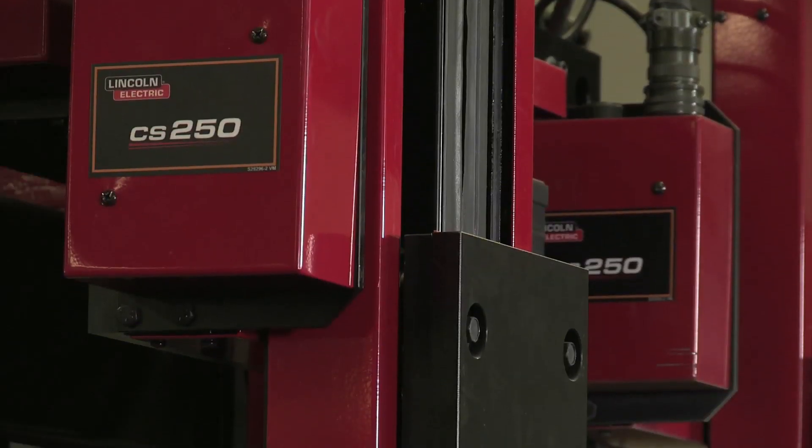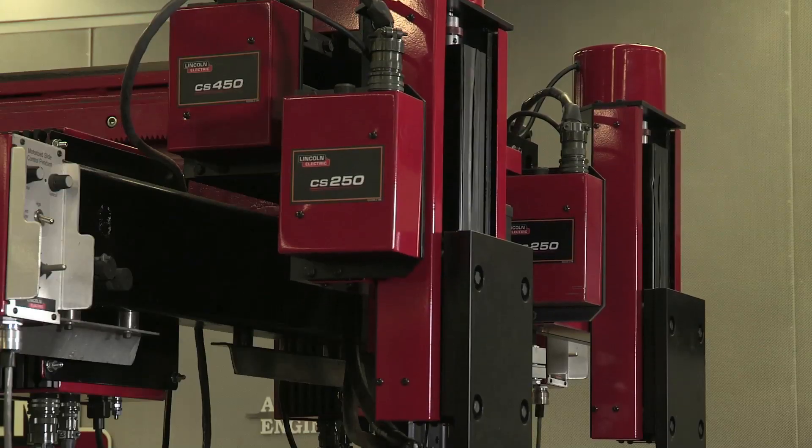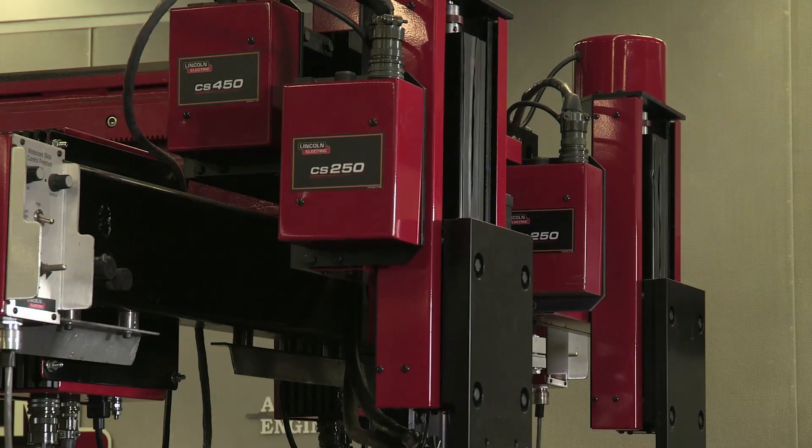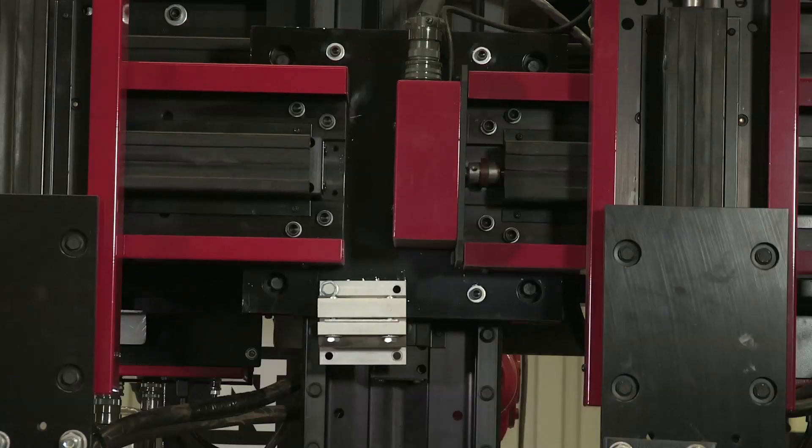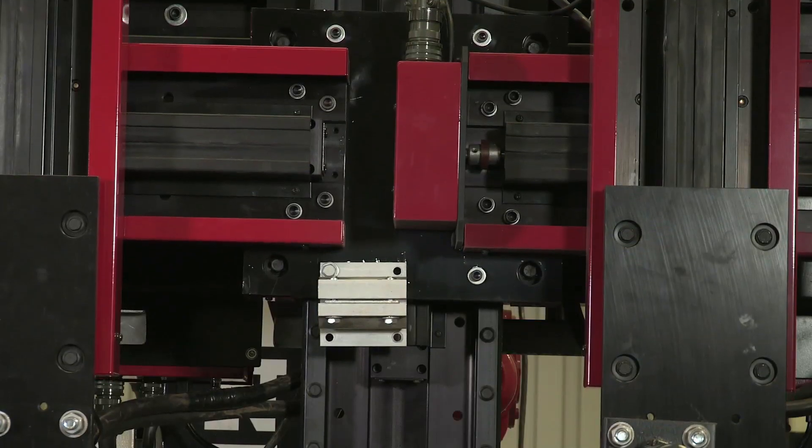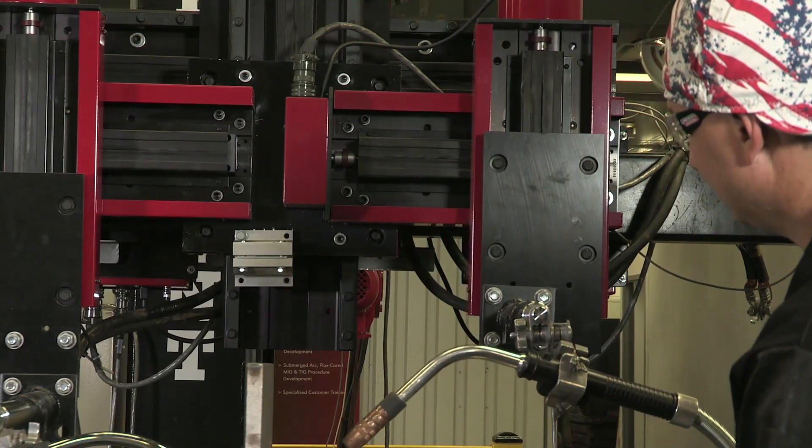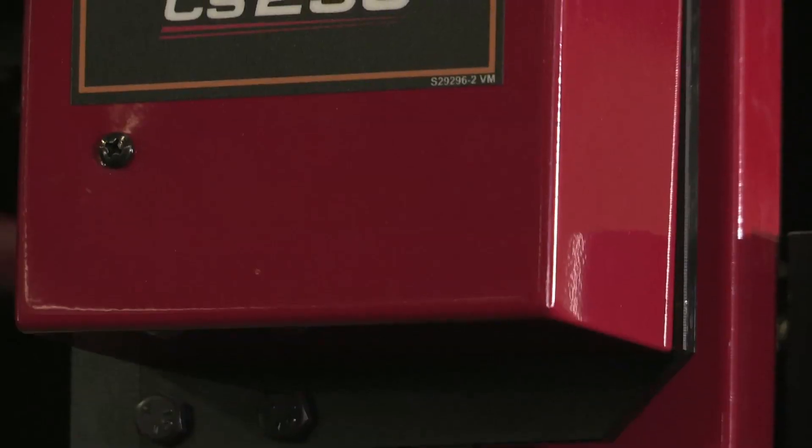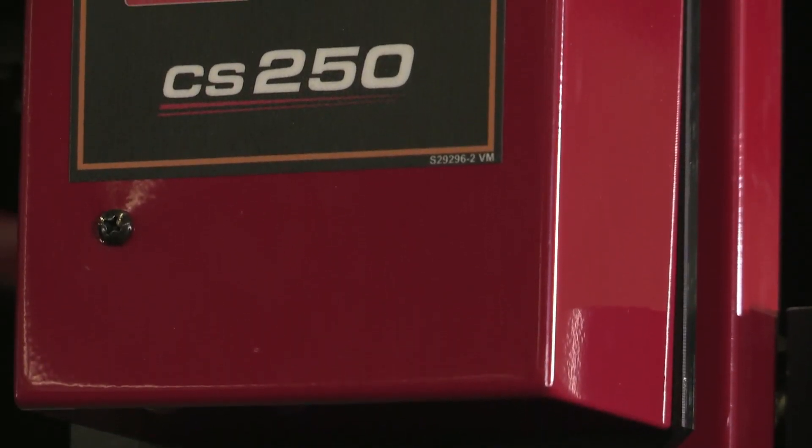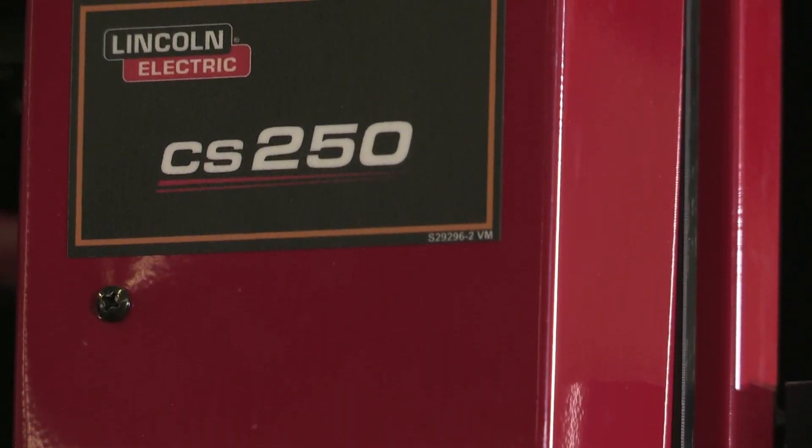When selecting a cross slide, consider weight and travel distance. The number of each slide designates the weight capacity it can support. For example, the CS40 supports 40 pounds. Stroke lengths are available in 3 by 3 inches or 6 by 6 inches for the CS40 cross slides, and in 5 by 5 inches or 10 by 10 inches for the CS250 and CS450 models.